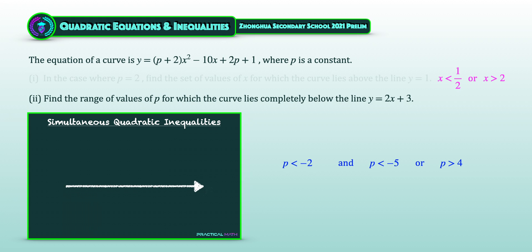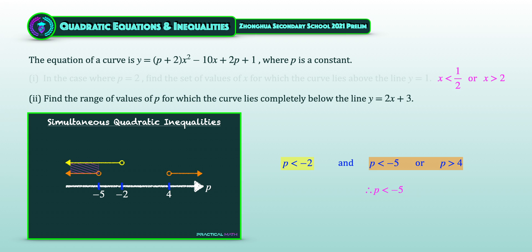We solve the simultaneous quadratic inequalities by presenting them on a number line. The first inequality, p < −2, is shown with a hollow circle above −2 and an arrow pointing left. The second set, p < −5 or p > 4, is also plotted. The overlapping region that fulfills both inequalities is p < −5. Thus, the answer for part 2 is p < −5.